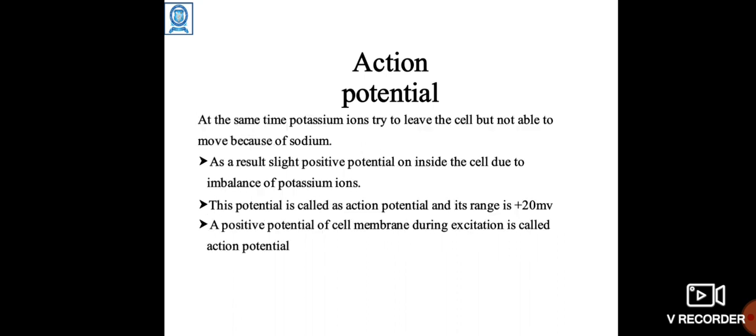At the same time, potassium ions try to leave the cell but are not able to move because of sodium. As a result, slight positive potential on the inside of the cell due to imbalance of potassium ions. This potential is called action potential with a range of +20 millivolts.